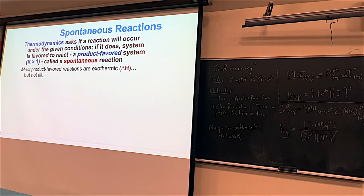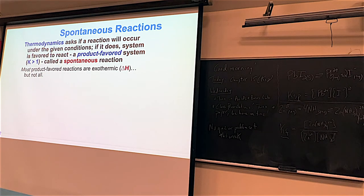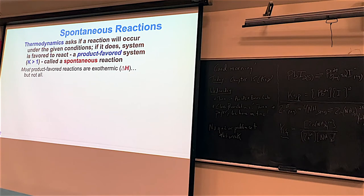Thermodynamics is the yes or no for reactions — a thumbs up or thumbs down. If a reaction will occur, the system is product-favored, meaning more products than reactants. In Chem 223 terms, K values greater than one are product-favored. Chemists call product-favored reactions spontaneous. I don't love that term because spontaneous in everyday language implies instantaneous, but in thermodynamics spontaneous just means the reaction is going to occur — not necessarily right now. That's more of a kinetics thing.